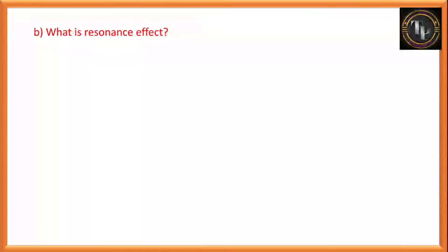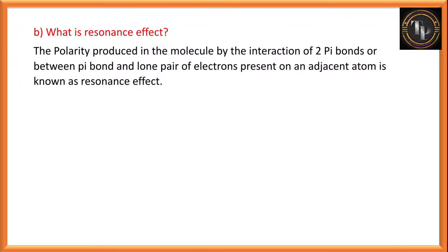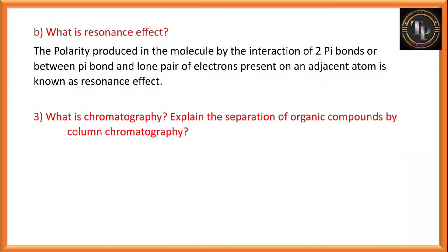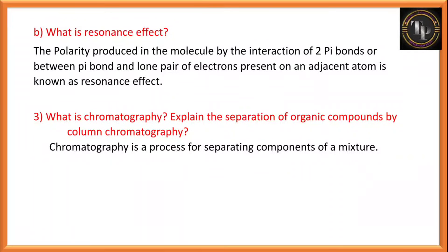What is the resonance effect? Polarity produced in a molecule by the interaction of two pi bonds, or between a pi bond and a lone pair of electrons present on an adjacent atom, is known as the resonance effect. Chromatography is a process for separating the components of a mixture. For column chromatography, read from the NCERT textbook.